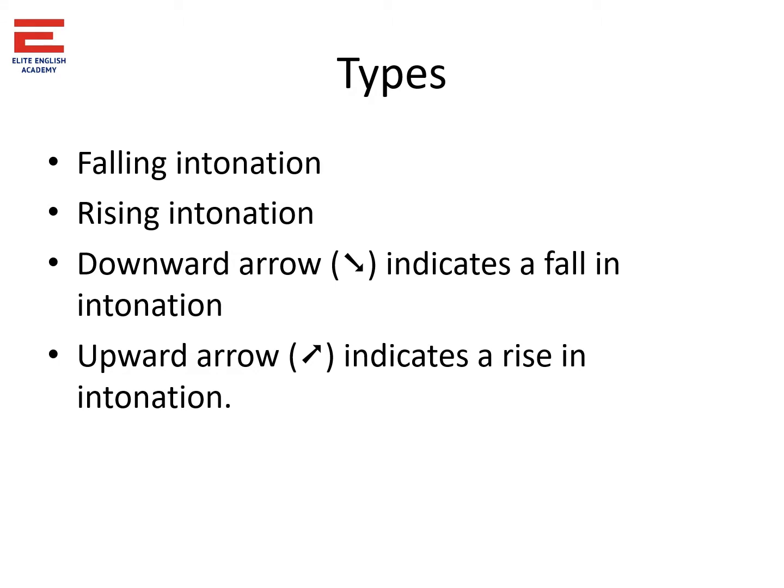There are two types of intonation: one is falling intonation, and another one is rising intonation. If you take an example in a sentence, falling intonation is marked like this, and rising intonation is marked like this. These are the basic templates available in phonetics.